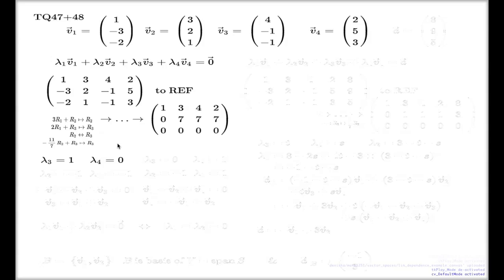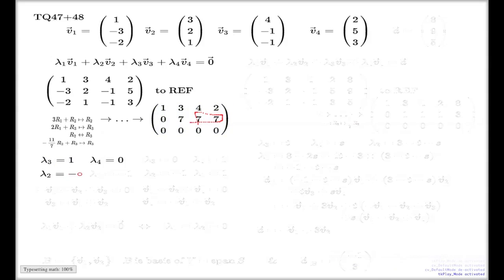My choice is λ3 = 1 and λ4 = 0. With this choice I can solve the system, since I've fixed the non-leading variables and ensured at least one non-zero element in the solution — namely λ3. For λ2, from the second row: 7λ2 + 7·1 + 7·0 = 0, so λ2 = -1.